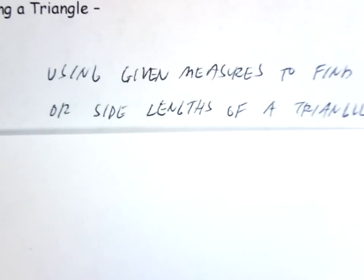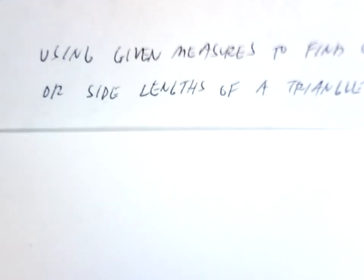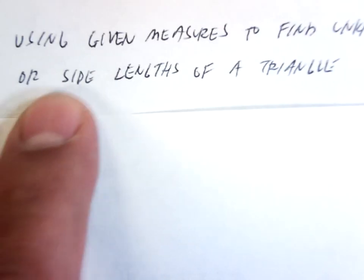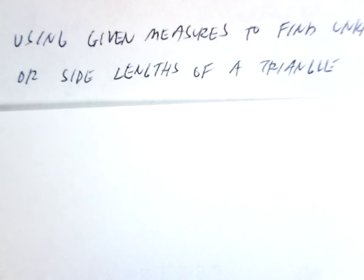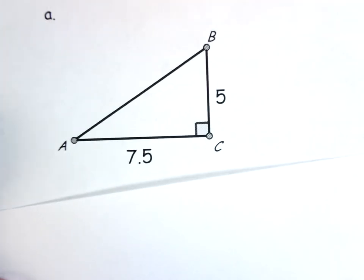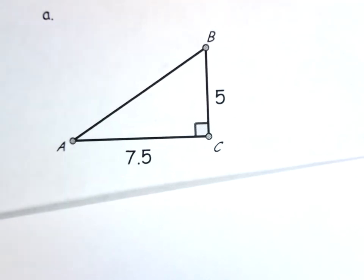So now — what does it mean to solve a triangle? To solve a triangle means we're using given measures to find unknown angle measures or side lengths of a triangle. We're trying to come up with as much information — all the sides and all the angles — given what we have.